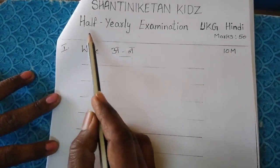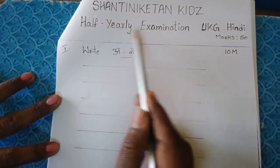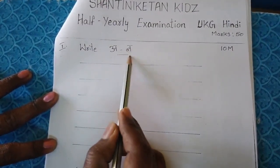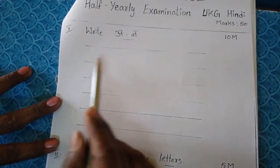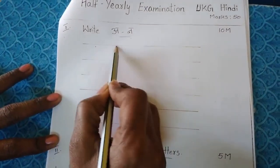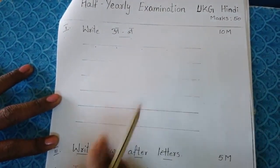Look here, this is our question paper. Half yearly examination. And first bit is write A to N. Here I have given lines, they have to write on lines. A, A, E, E, like that they have to write.